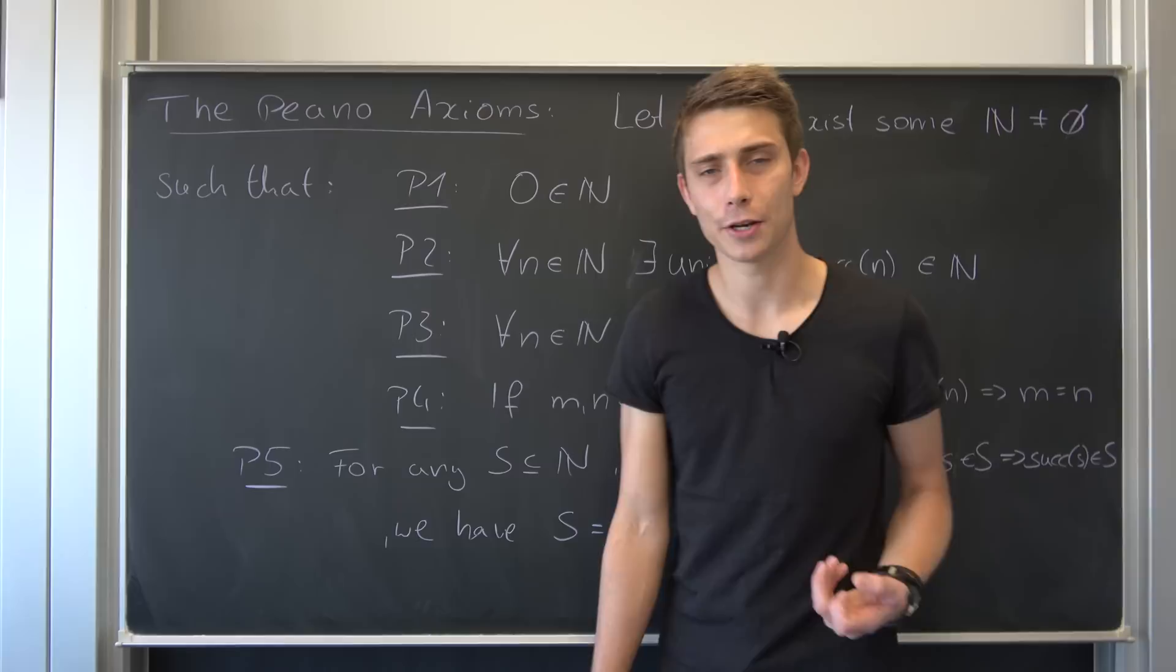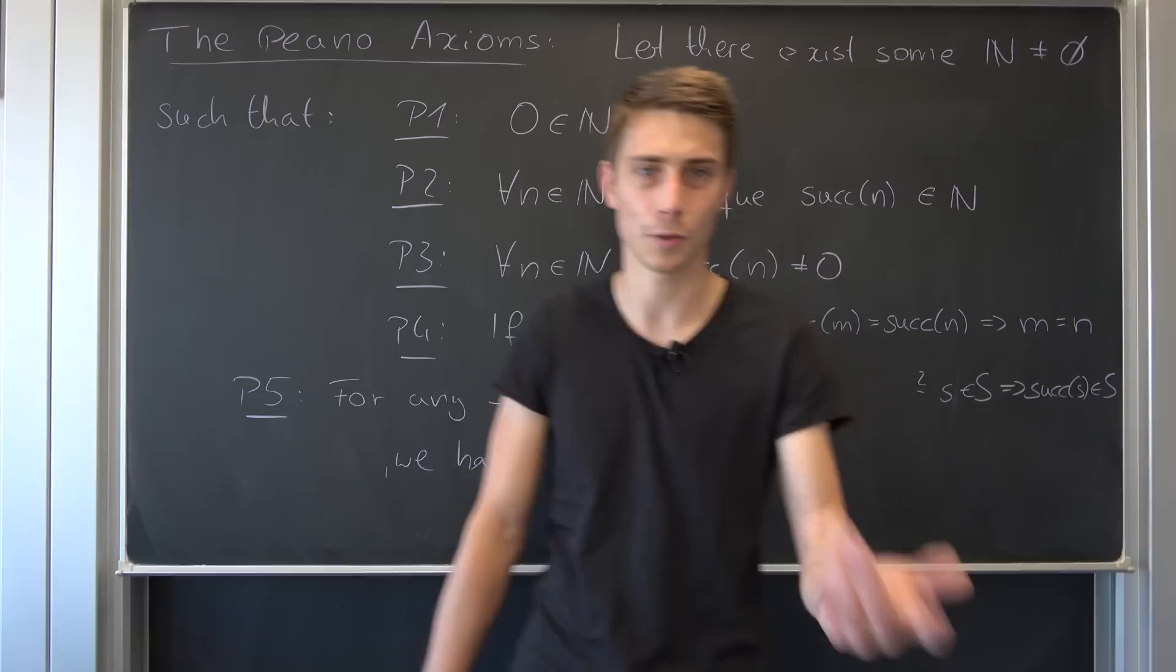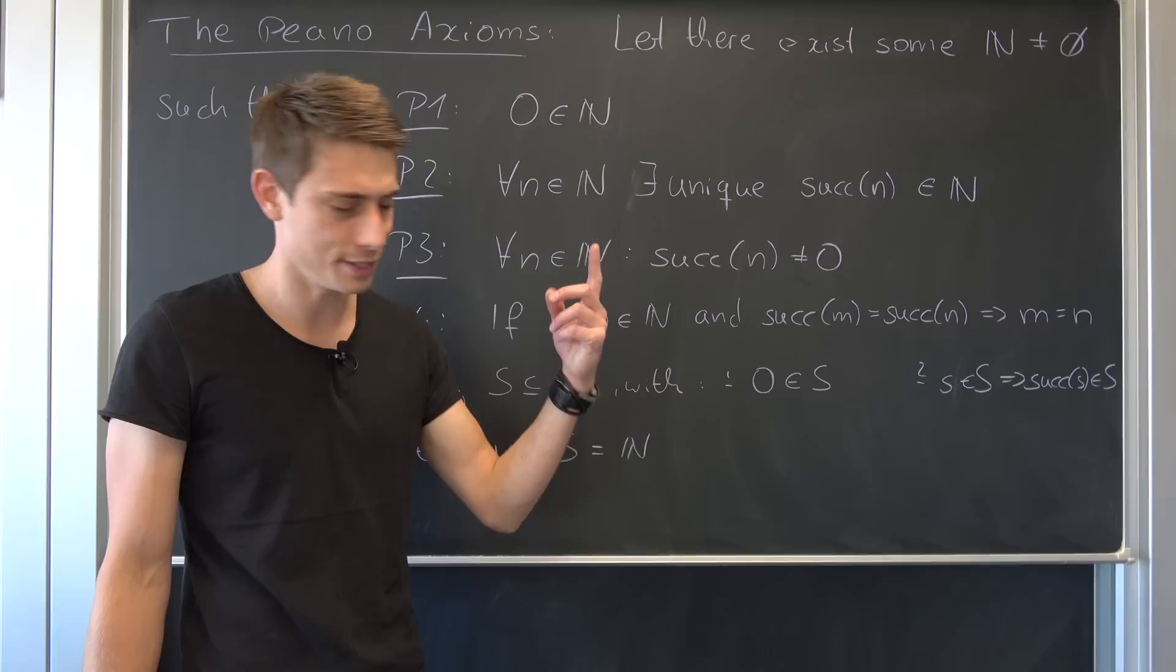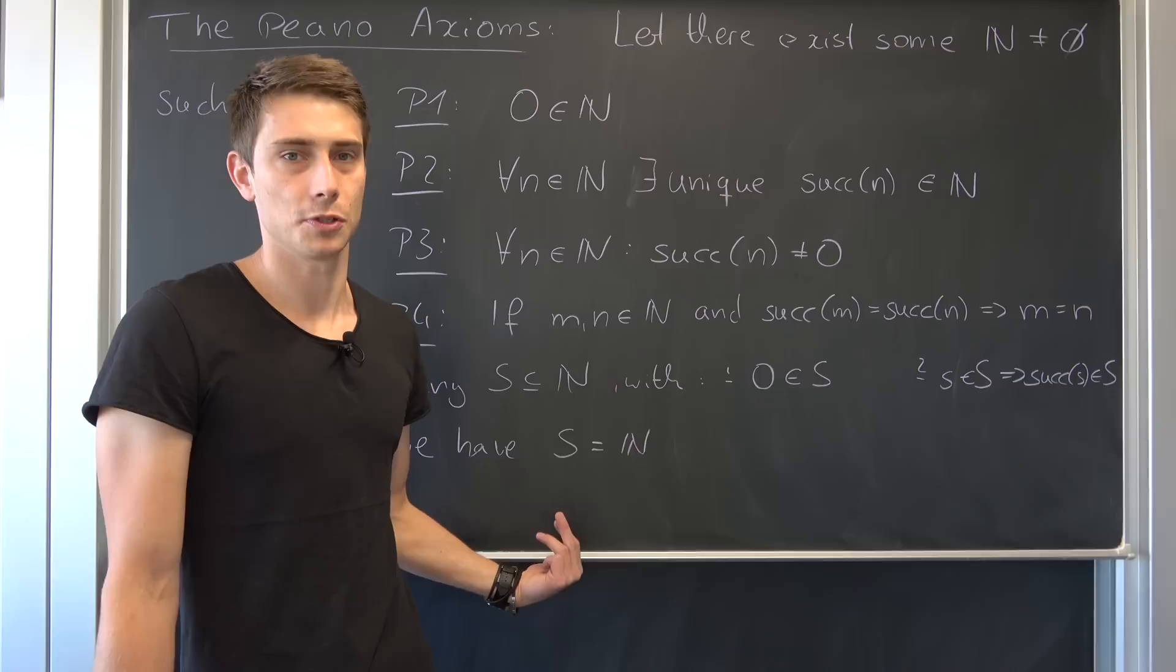Next rule, well, for all N element of natural numbers, well, there is no successor of N such that we have zero in the end. So if you would include negative one, for example, in the natural numbers, then we would have the successor of negative one being zero, but this doesn't work.